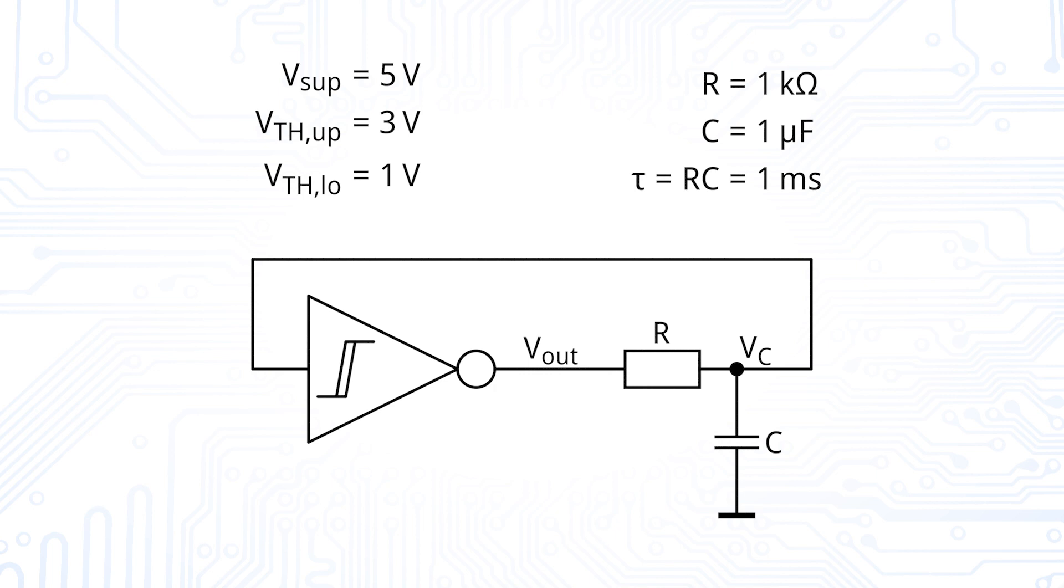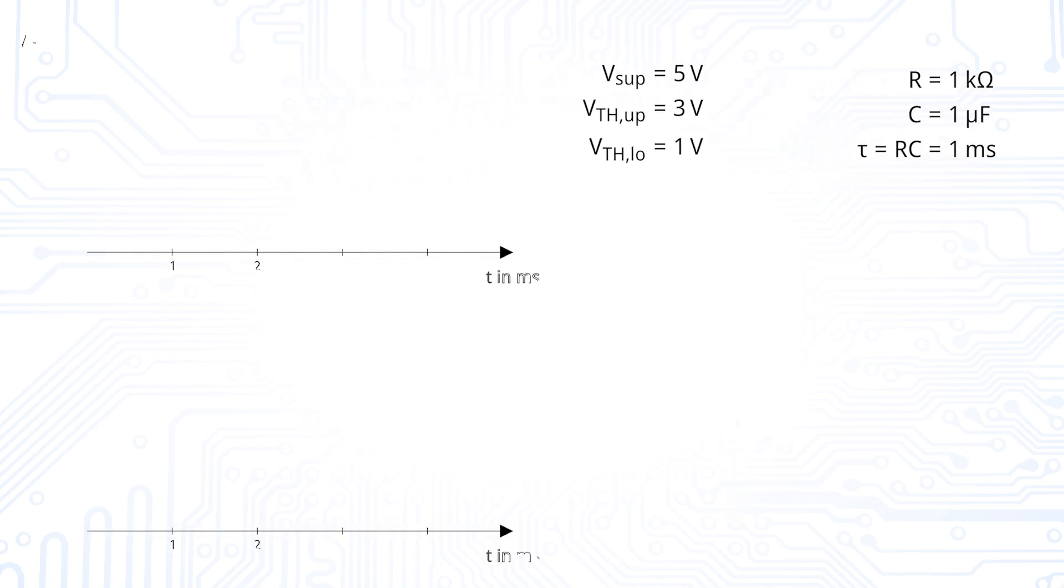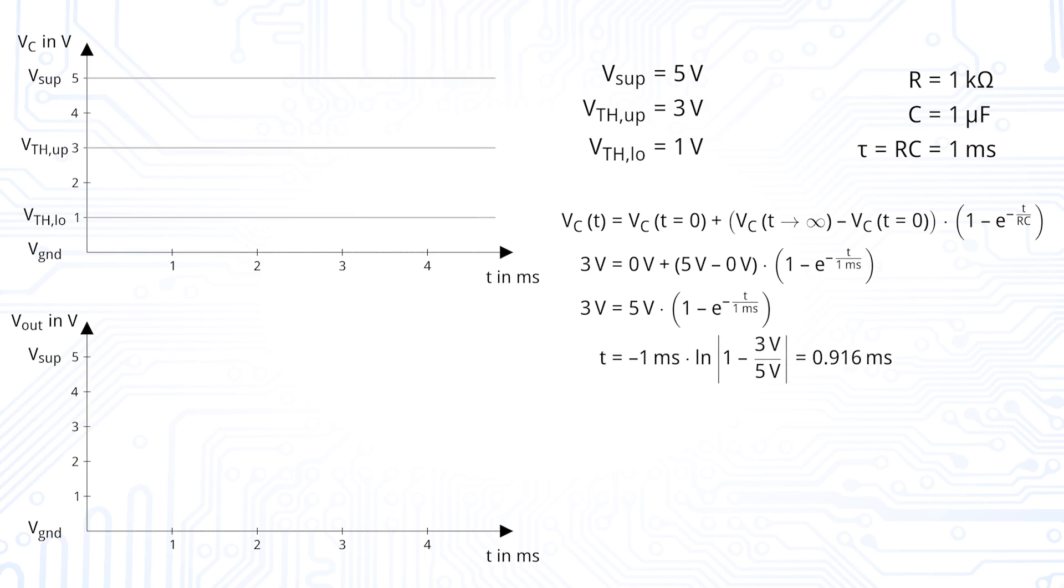The time constant, therefore, is tau equals R times C equals 1 millisecond. For the first calculation, the voltage at time T equals 0 is 0V and the RC structure is tending towards the upper supply voltage, which is 5V.